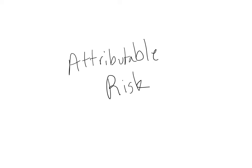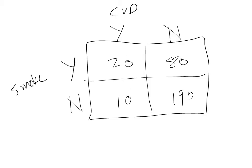In this video, I will provide a brief introduction to attributable risk. Let's start with our standard 2x2 table. In this case, we are interested in the association between smoking, our exposure, and cardiovascular disease, our outcome.